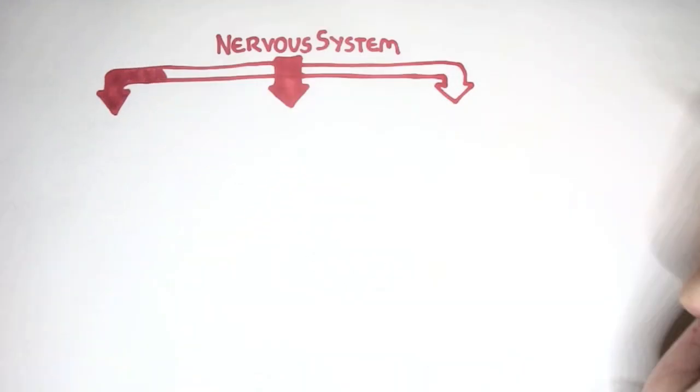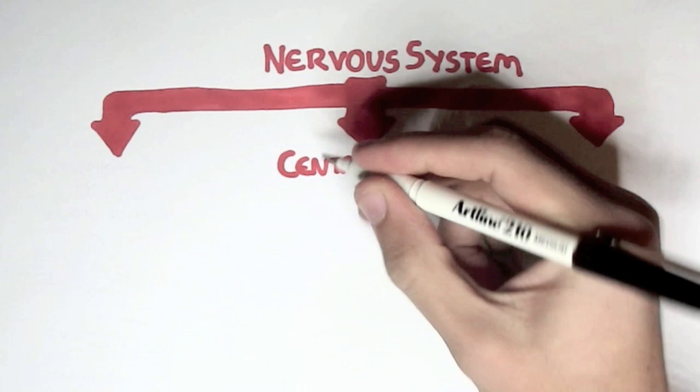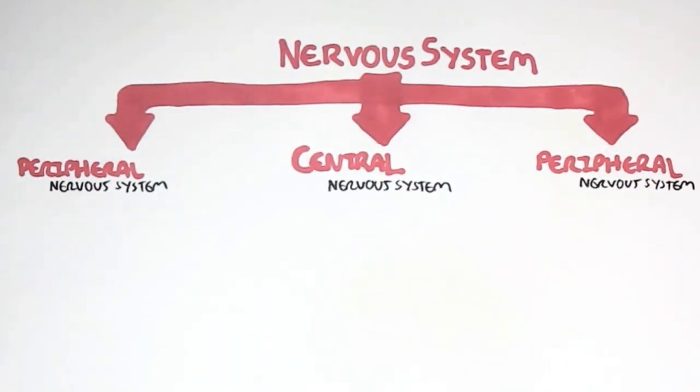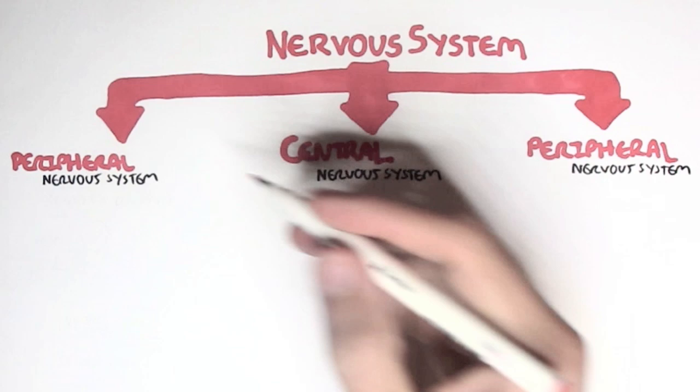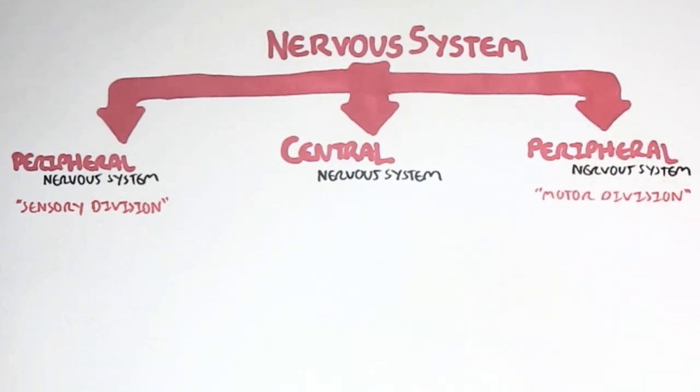So the nervous system, remember, can be divided into two major parts, that is the central nervous system and the peripheral nervous system. Now I drew two peripheral nervous systems because the peripheral nervous system consists of a sensory division and a motor division, or better yet, an efferent division.